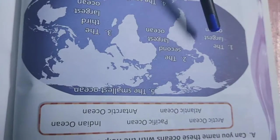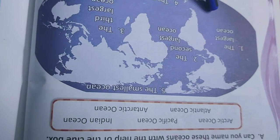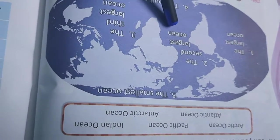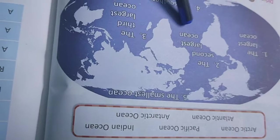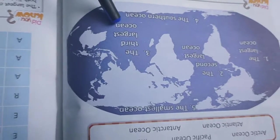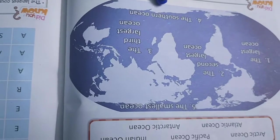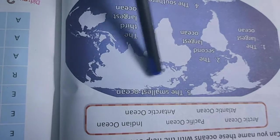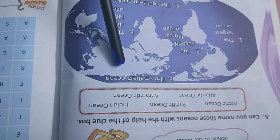Number 1, the largest ocean is Pacific Ocean. Number 2, the second largest ocean is Atlantic Ocean. Number 3, the third largest ocean is Indian Ocean. Number 4, the Southern Ocean is Antarctica. Number 5, the smallest ocean is Arctic Ocean.